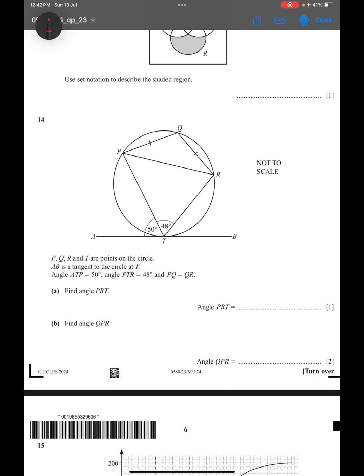Question 14. They have given you P, this is P, Q, R, T are the points on the circle. AB is tangent to the circle at T, so you see that AB, this is tangent to the circle at this point T.